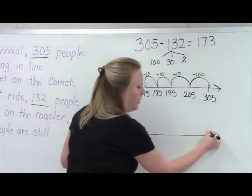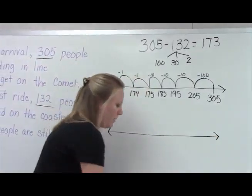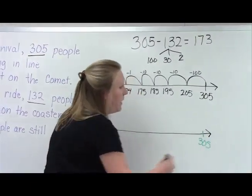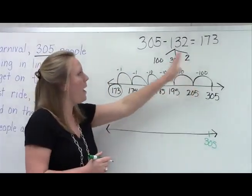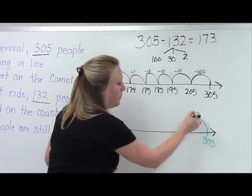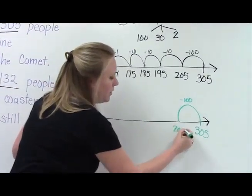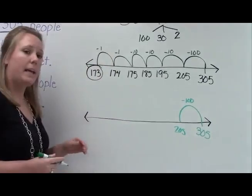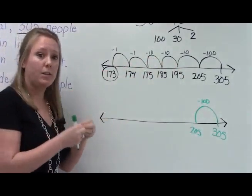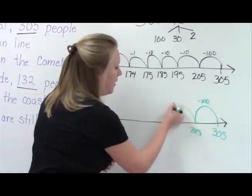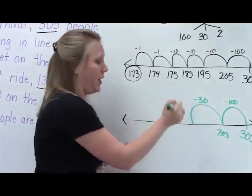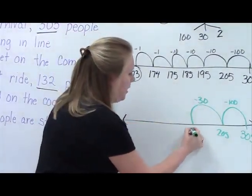So again, we're going to draw our open number line. But this time, I'm going to still start at 305 and do the same thing where I'm hopping backwards 132. So I'm going to hop back minus 100 gives us 205. But again, depending on your student's knowledge, the three tens could be grouped together into one hop, and they could hop back minus 30. Just make sure they label it minus 30, and then we get 175.